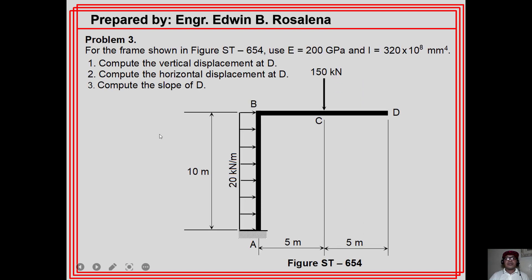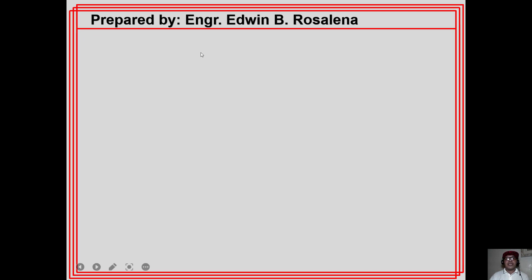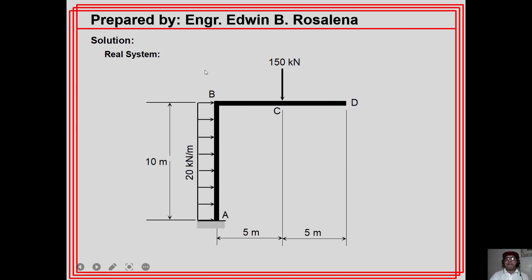Problem number three: for the given frame, use E = 200 GPa and I = 320 × 10⁸ mm⁴. Compute the vertical displacement at D, the horizontal displacement at D, and the slope at D. This involves deflection, displacement, and rotation of a frame. We use the virtual work method. For the first step, we consider the real system and form the moment equation of each segment of the frame with the real loads.